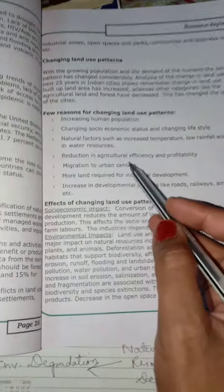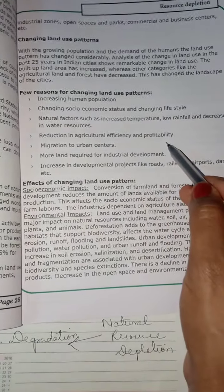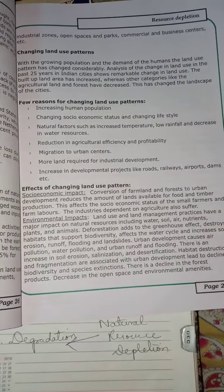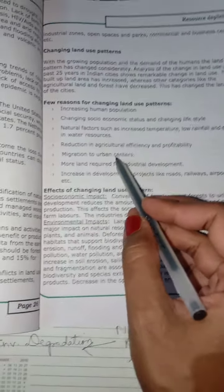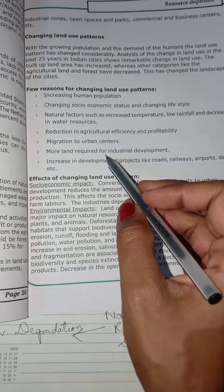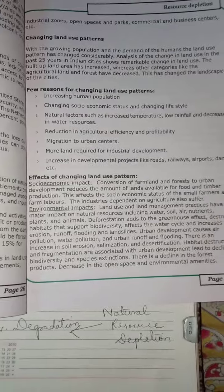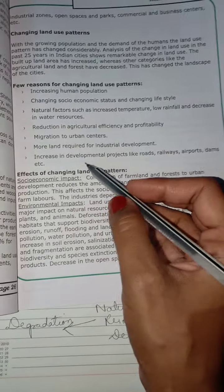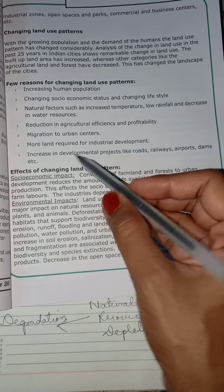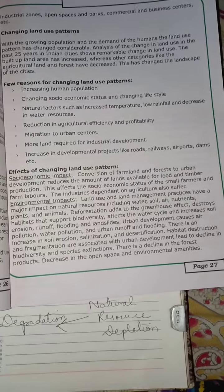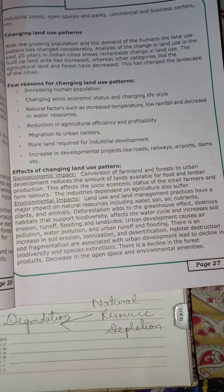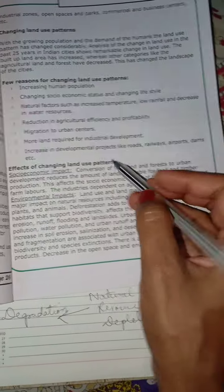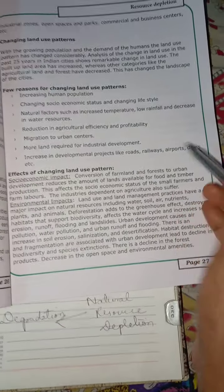The soil is losing its natural fertility, affecting agriculture efficiency and profitability. Farmers are not getting enough benefits from the soil, so they migrate to urban centers and city areas for jobs and better living conditions. They move towards construction of industries, and for building industries you require space — roads, railways, etc. — which are also reasons for changing land use patterns.